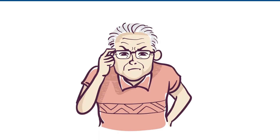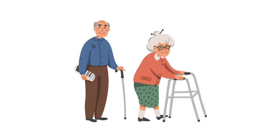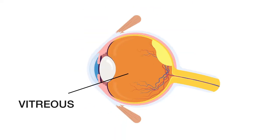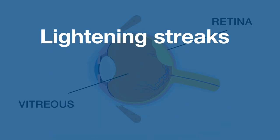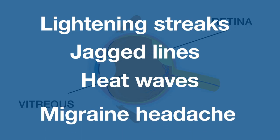Flashes. Flashes, another visual disturbance, looks like flickering strands of lights or sparks. Flashes also become more common with age and are caused by the vitreous rubbing or pulling against the retina. They can look like lightning streaks, jagged lines, or heat waves, and sometimes occur with migraine headaches.